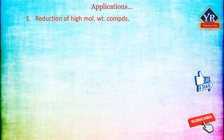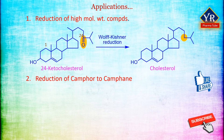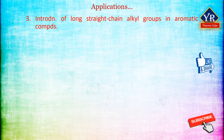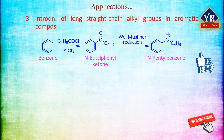Application 1 — Reduction of high molecular weight compounds: High molecular weight compounds, e.g., 24-keto cholesterol, have been successfully reduced to cholesterol by this reduction reaction. Application 2 — Reduction of camphor to camphene: Camphor, a terpene which possesses a carbonyl group, is converted to a methylene group in camphene. Application 3 — Introduction of long straight chain alkyl groups in aromatic compounds: In Friedel-Crafts alkylation, a straight chain alkyl group longer than ethyl cannot be introduced due to rearrangement, but this has been achieved by acylation followed by Wolf-Kishner reduction.